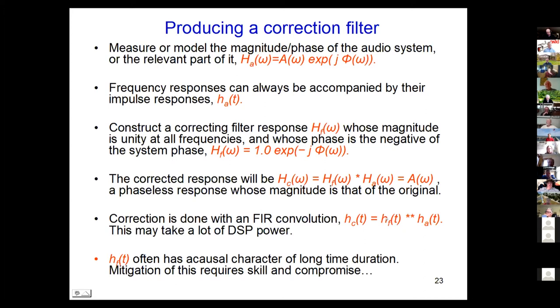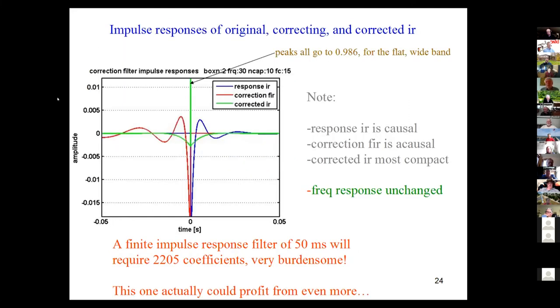This correcting filter often is a-causal - it has a response before T equals zero. That's fine in digital audio. We can define that. It doesn't matter where we set T equals zero, but it takes some skill to sort things out and get it to work.